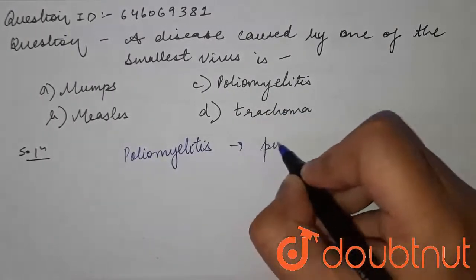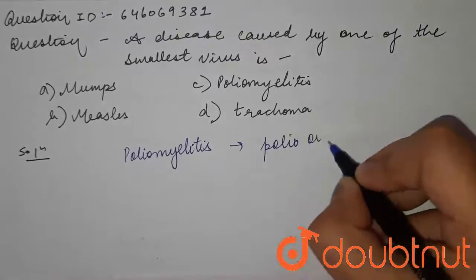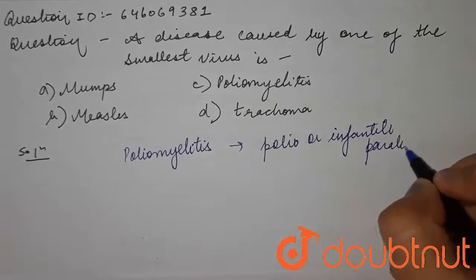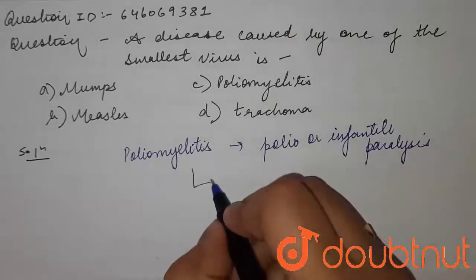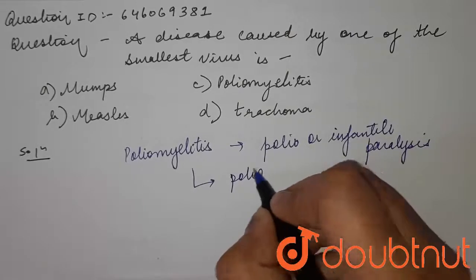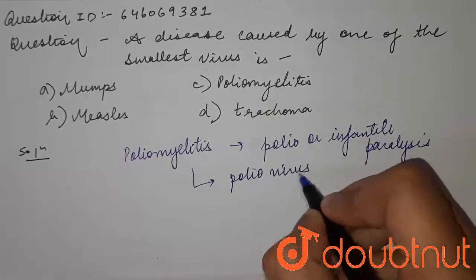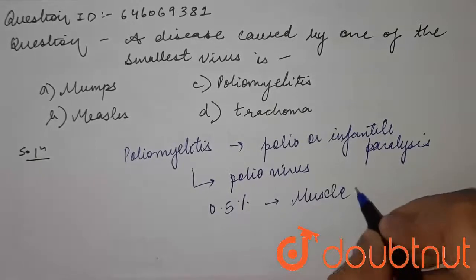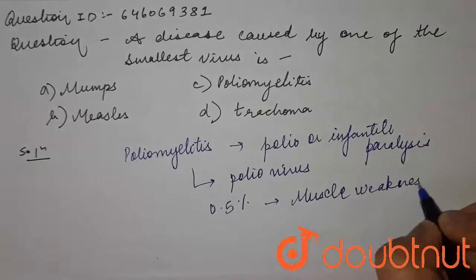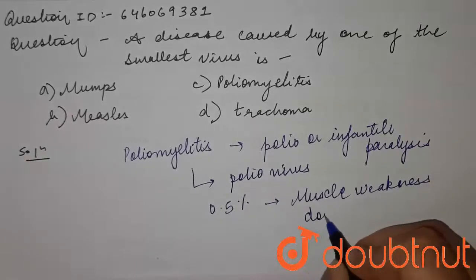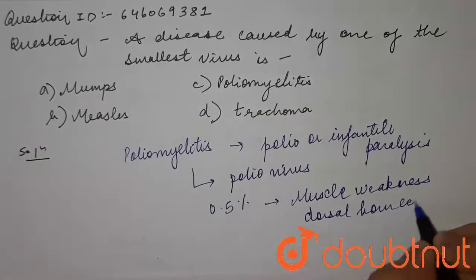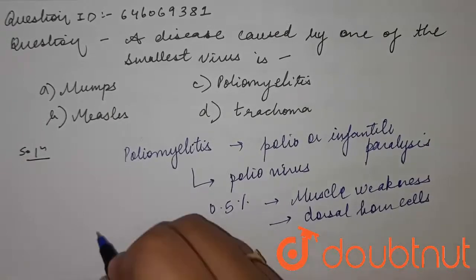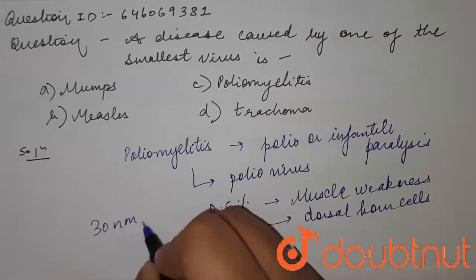Poliomyelitis, which is commonly known as polio or infantile paralysis, is an infectious disease caused by the polio virus. In about 0.5 percent of cases it leads to muscle weakness affecting the dorsal horn cells of the spinal cord. This viral particle is about 30 nanometers in diameter.